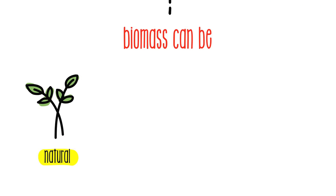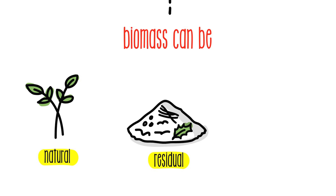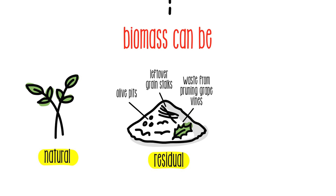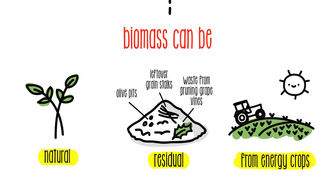Biomass can be natural, being produced without human intervention, residual, by-products or waste from farming such as olive pits, grain stalks or vine-growing remains, or resulting from energy crops.